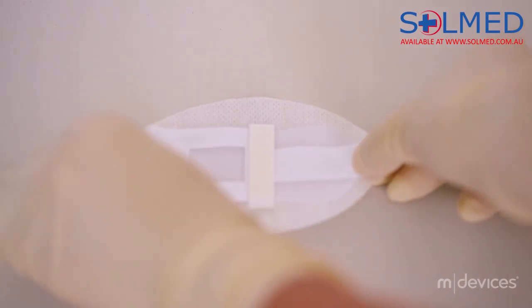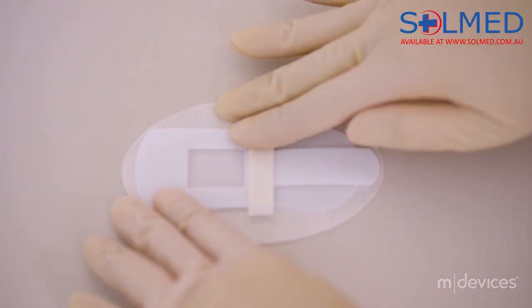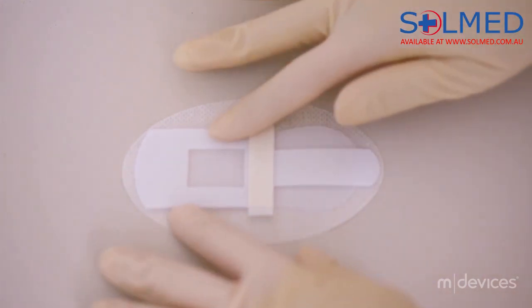Step 4: Apply the universal securement device to the desired location without any wrinkling on the dressing.